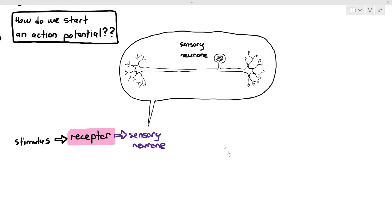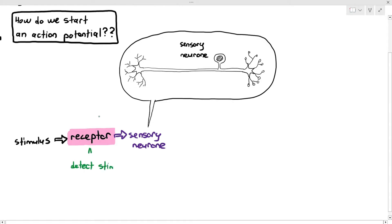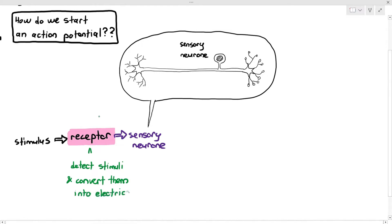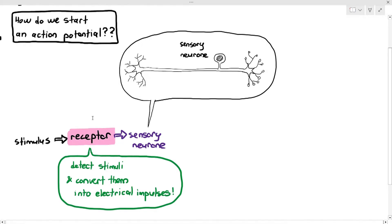To start the action potential in the sensory neuron, you need something called receptors, because the function of the receptor is to actually detect the stimulus and convert them into electrical impulses. That means the sensory neuron cannot just start an action potential or electrical impulse spontaneously. They need to send an impulse when the receptor tells them to, because the receptor is the one that is detecting what is going on around us.